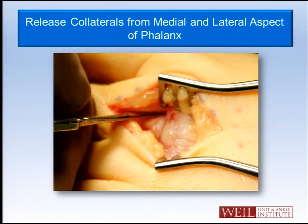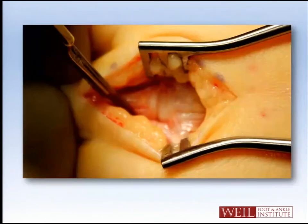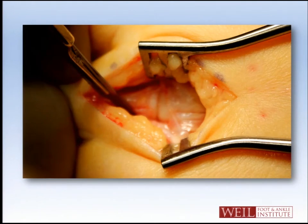These are a bunch of mistakes I've made in the past that I've figured out. One of the most important things is releasing the collaterals off of the phalanx — I release the medial and lateral collateral off of the phalanx, not off of the metatarsal. You need to leave the collaterals fully intact to the metatarsal, as the collaterals are important for stability and blood supply to the metatarsal head. So I never release the collaterals off the metatarsal.